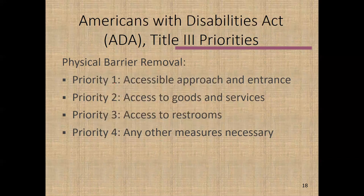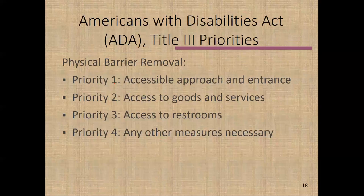First, you need an accessible approach and entrance — some way for people in wheelchairs, using canes, or with mobility issues to reach and enter your facility. Second, even if the building is okay, there can be limited access to goods and services. For example, in a retail portion of your business — like a Rainforest Cafe or Cracker Barrel — if you have narrow aisles, a wheelchair user may not be able to maneuver through them. That is an ADA violation. This can also present fire hazards, so it's another reason to be concerned.